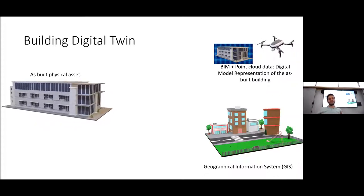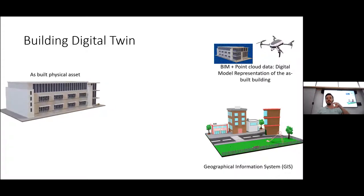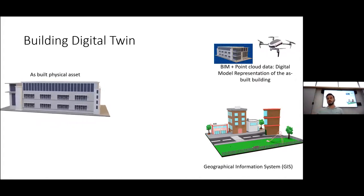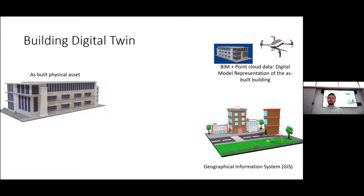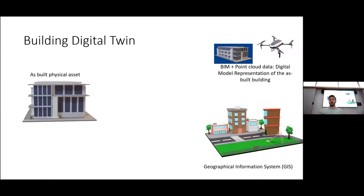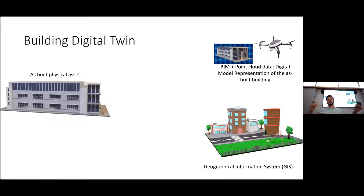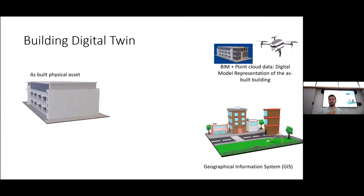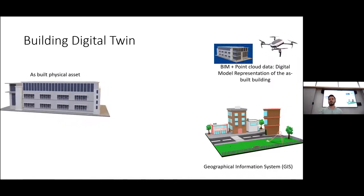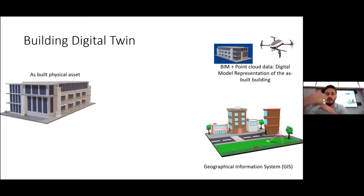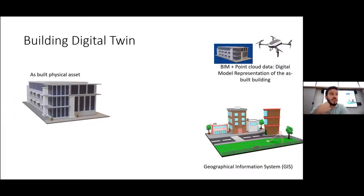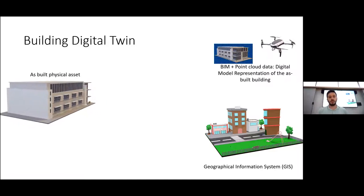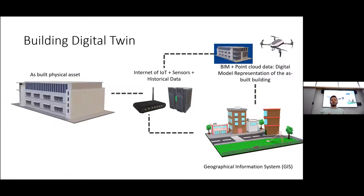The other important component is the Geographical Information System — where is this building located and how does it connect with surrounding assets? For a campus or city-level digital twin, we need to integrate this information: where are the water connection points, where is the sewer, where does electricity come from, how much is consumed. This is all part of the GIS that must be included in a building's digital twin.